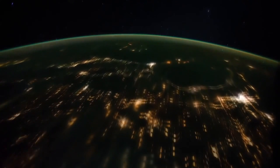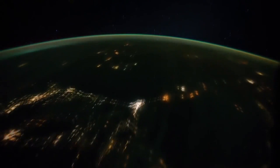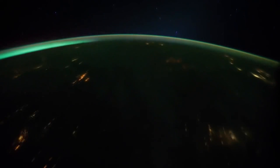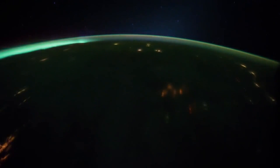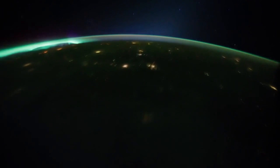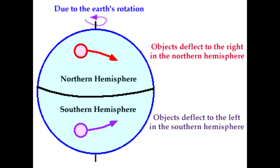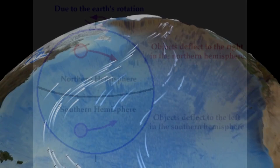The Coriolis effect is the tendency for a moving body on or above the Earth's surface to drift sideways from its course because of the motion of the Earth beneath it. Objects in the Earth's northern hemisphere will tend to drift to the east because of this, and in the southern hemisphere objects will drift to the west.